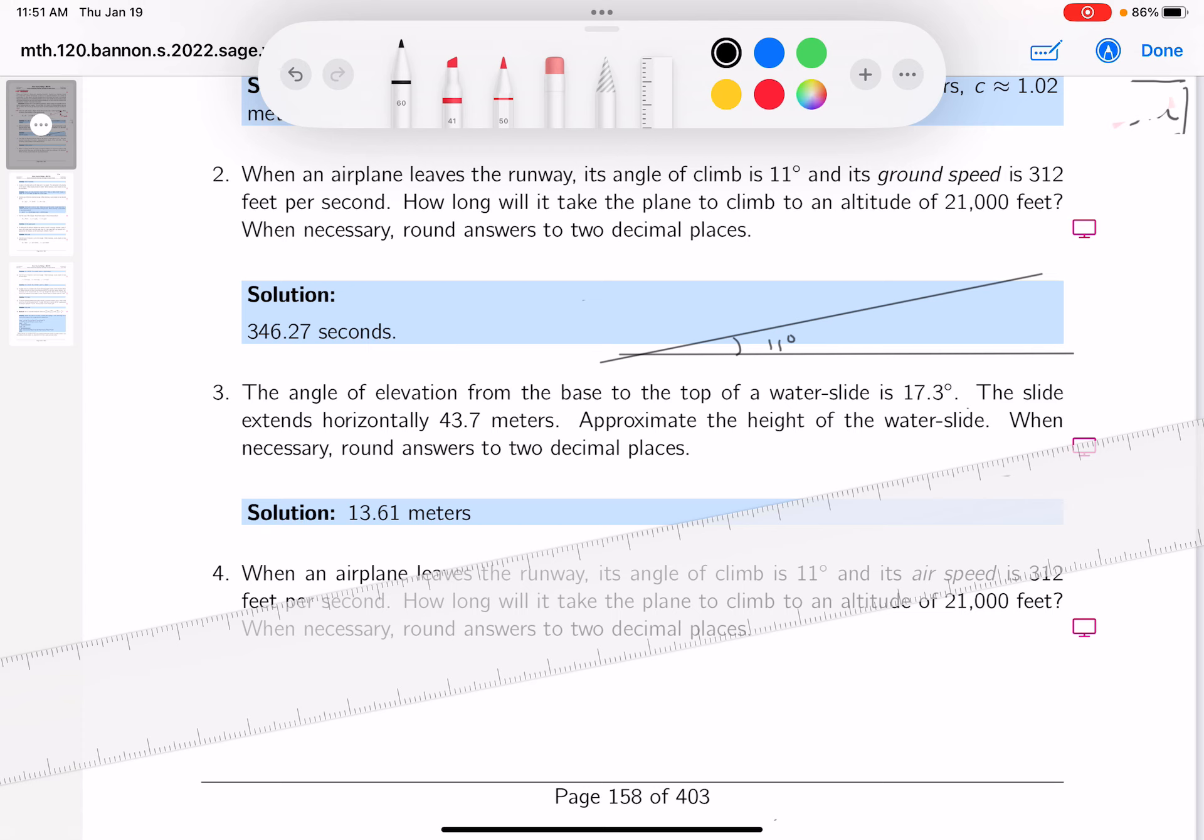It says an airplane leaves a runway, its angle of climb is 11 degrees and its ground speed. I want to point out what ground speed is. Ground speed is the speed that would be measured on the ground. And what does it say? It's 312. This is the ground speed, feet per second.